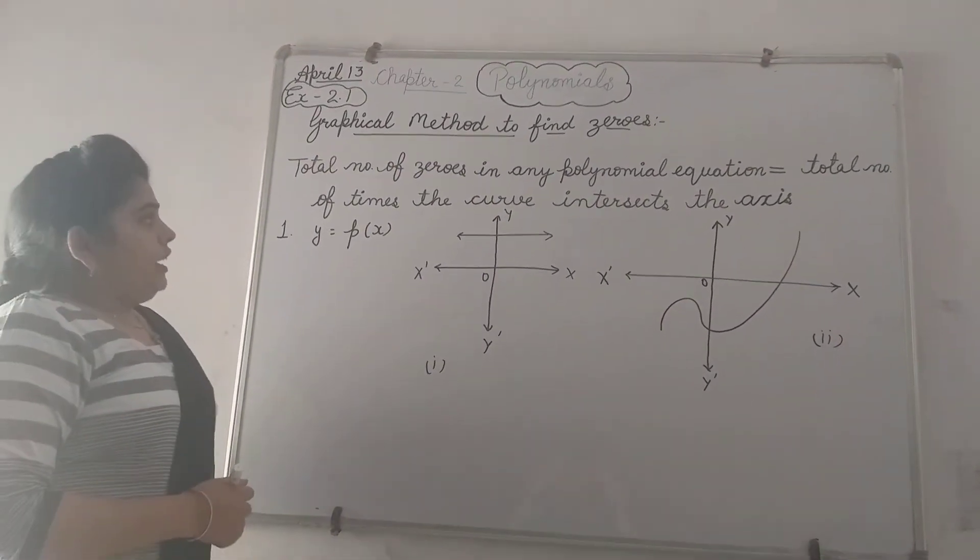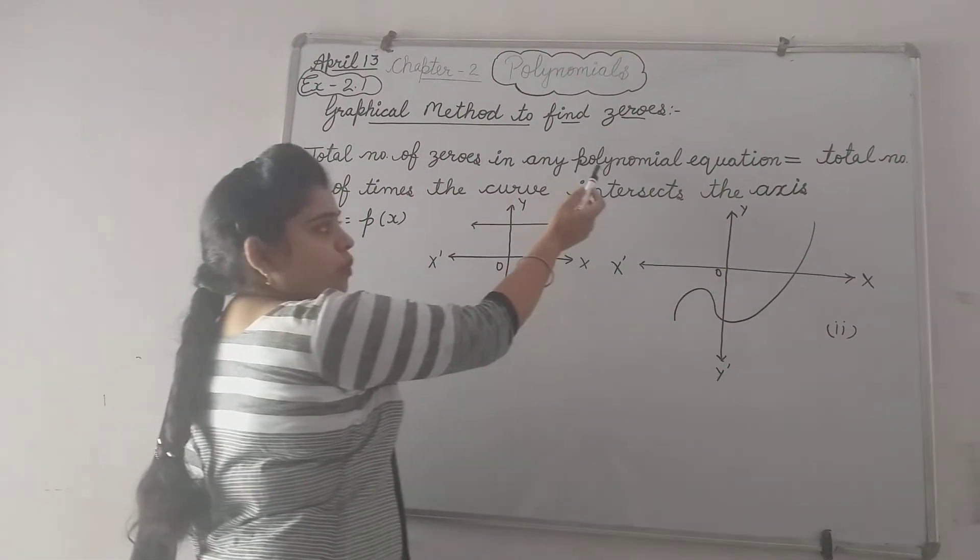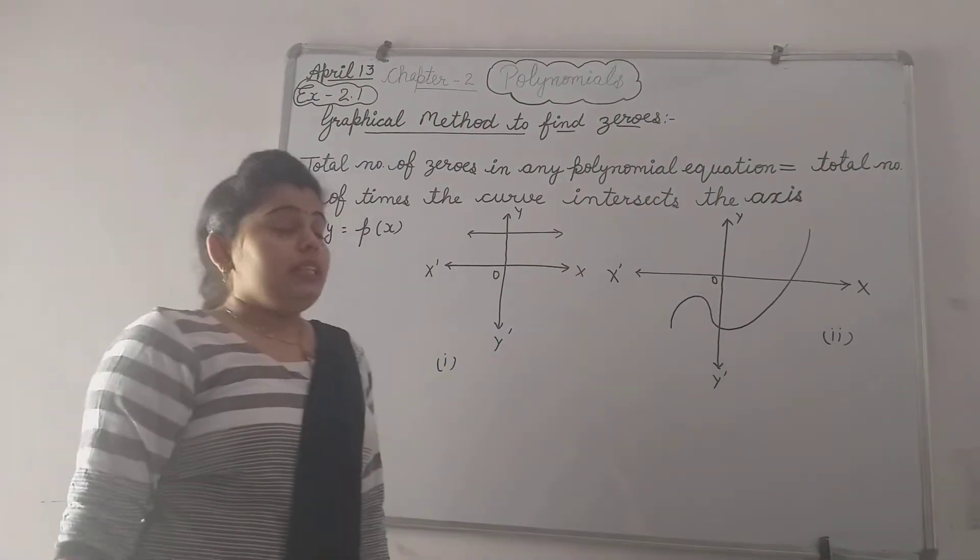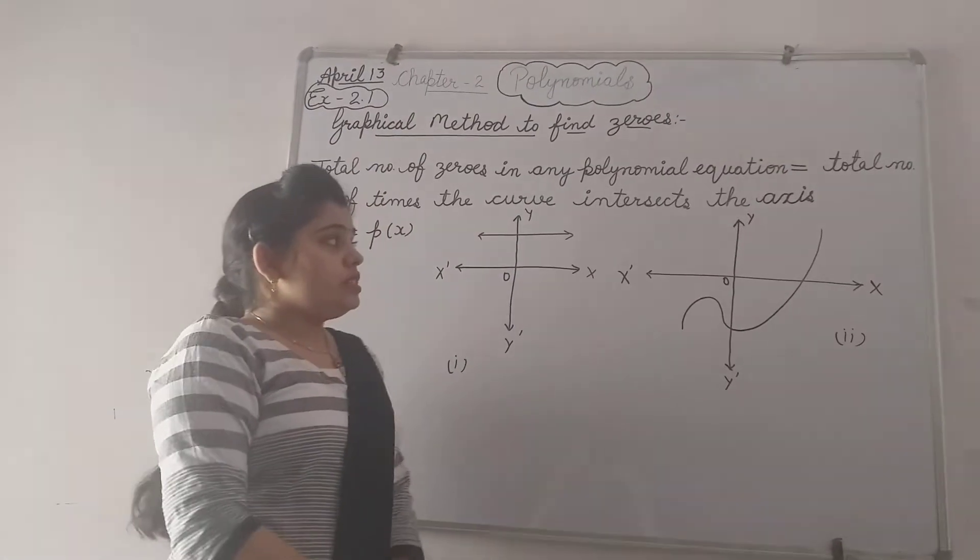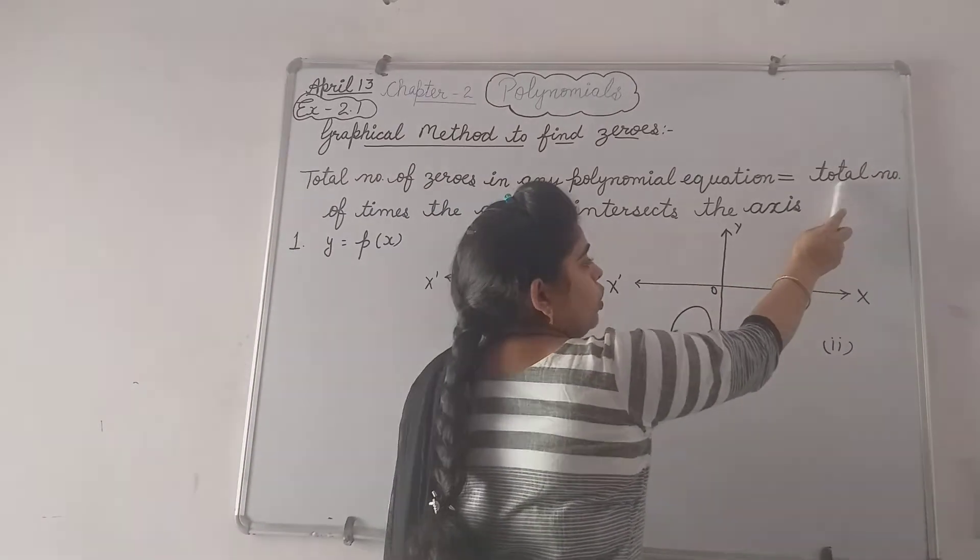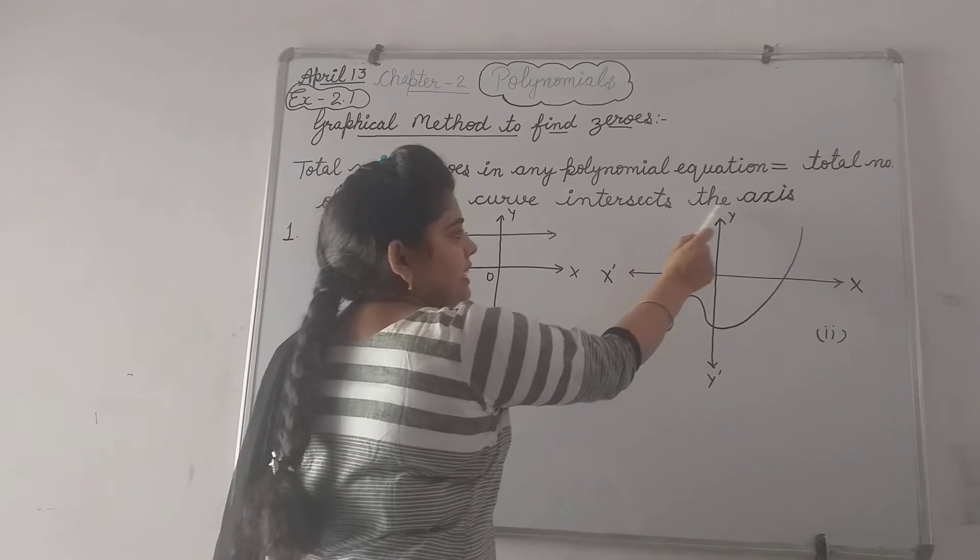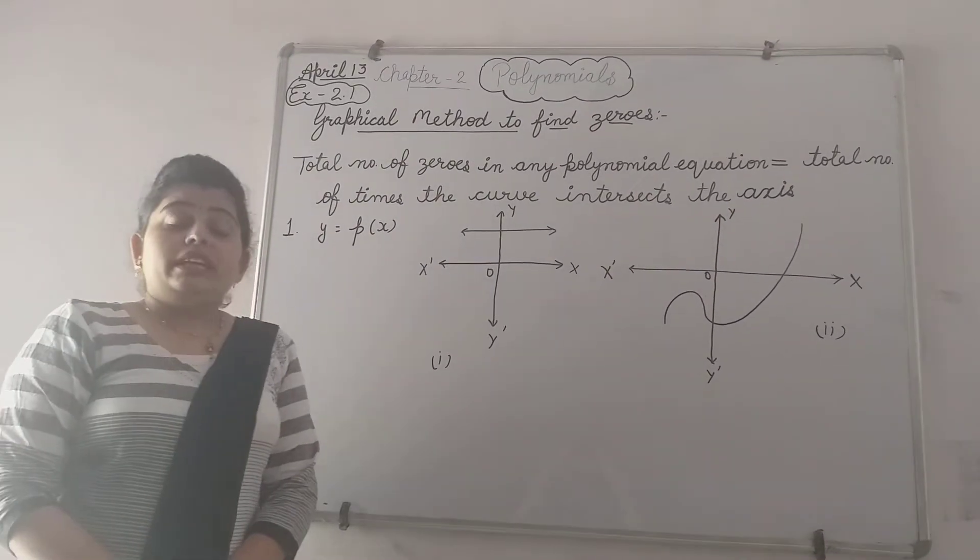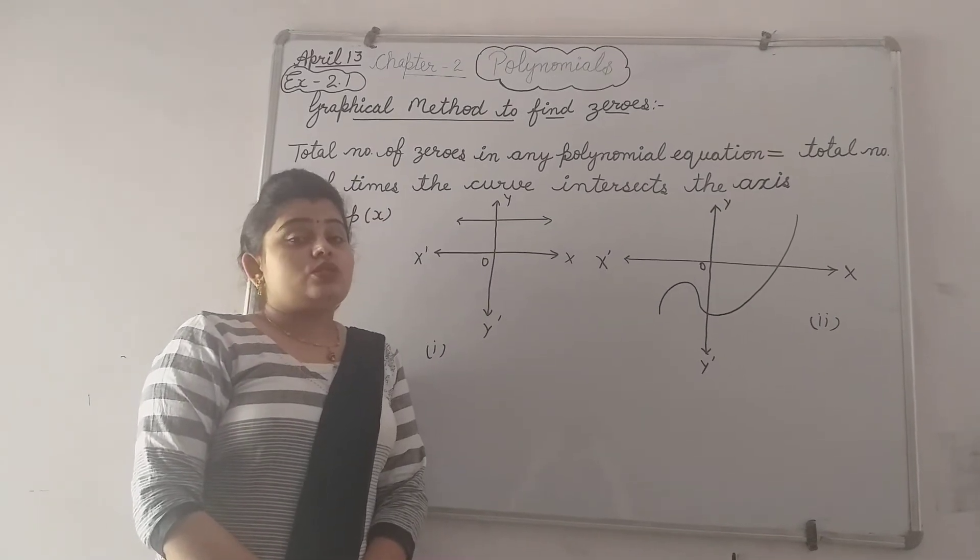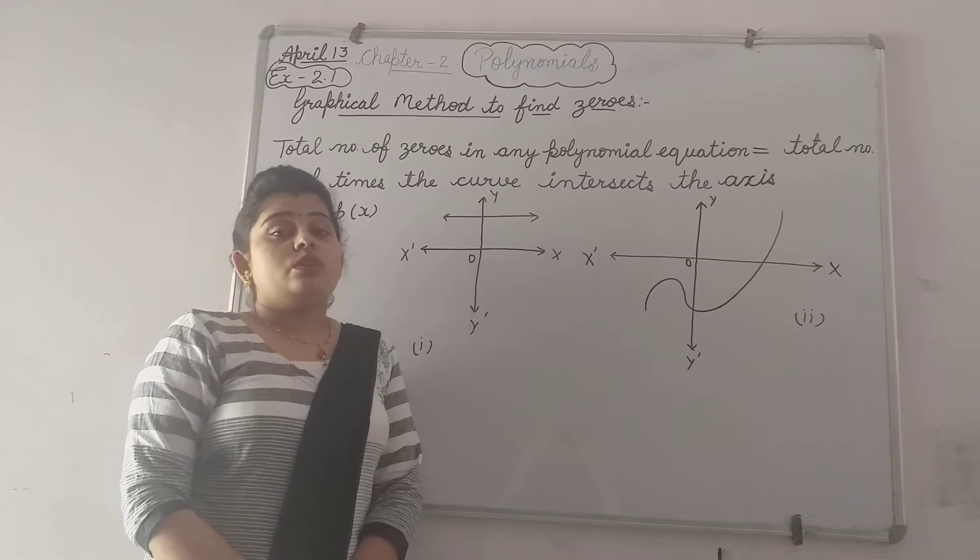According to graphical methods, total number of zeros in any polynomial equation equals the total number of times the curve intersects the x-axis. The more times the curve cuts the x-axis, the more number of zeros we have.